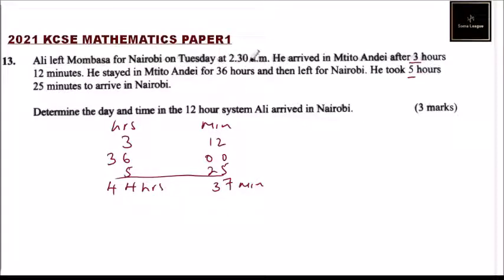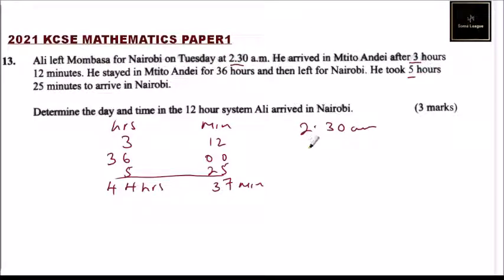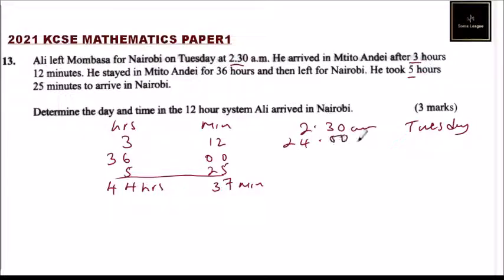We now add this total travel time to the departure time. He started his journey at 2:30 a.m. on Tuesday. We can also account for another 24 hours, which represents a full day — so that's 24 hours added.